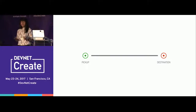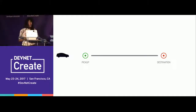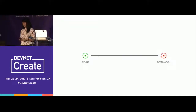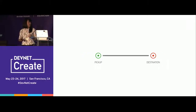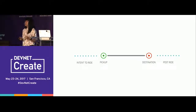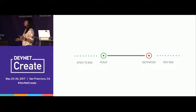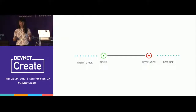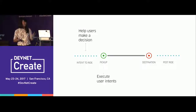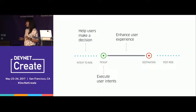Uber is a convenient way to get from point A to point B — push a button, get a ride. The ride request lifecycle looks like this: you order a ride, the driver accepts, picks you up, and takes you to your destination. But from a user's perspective there's more involved: the moment a user expresses intent to ride, the act of riding itself, and afterwards when they accumulate a history of rides.